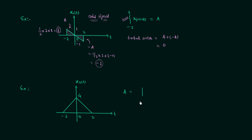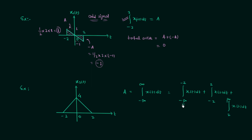The area A equals the integration from minus infinity to infinity of x2(t) dt. We can split this into three parts: from minus infinity to minus 2, from minus 2 to 2, and from 2 to infinity. Since x2(t) equals zero outside minus 2 to 2, the first and third integrals are zero. So we only need to integrate x2(t) from minus 2 to 2.